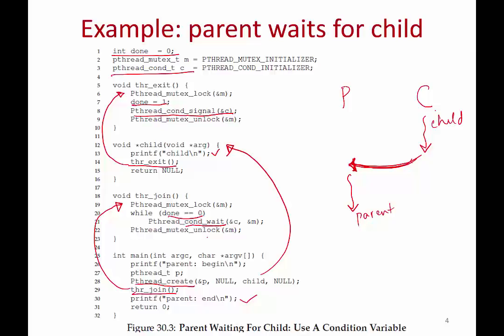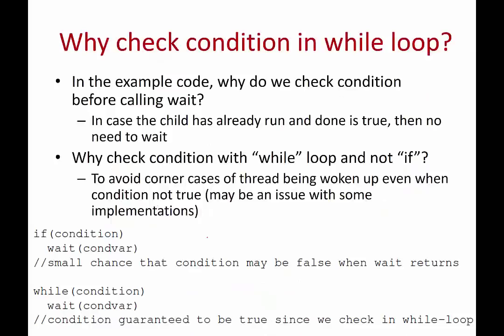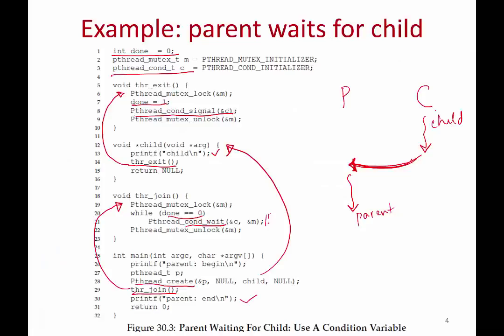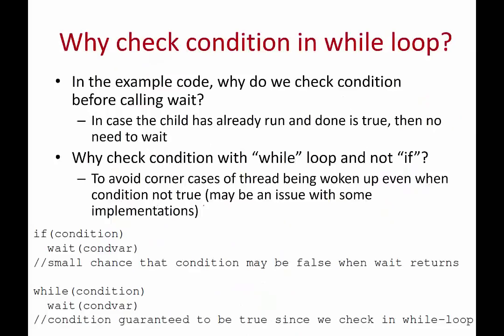That is what condition variables are used for — to ensure some kind of ordering. The parent shouldn't by default always sleep; it should sleep only if the child has not yet run. If done is already 1, the parent need not wait. So before calling wait, it's a good idea to check the condition. If you sleep even when the condition is already true, nobody is going to wake you up because the signal has already happened. So always check the condition before calling wait.